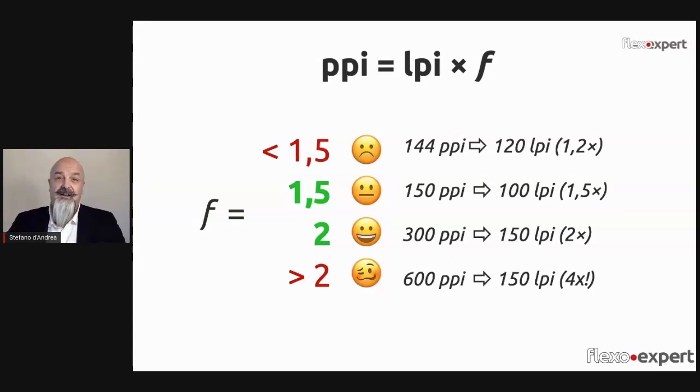When we print 300 pixels per inch images at 150 lpi (60 lines per centimeter), that is a factor of 2, which is good.